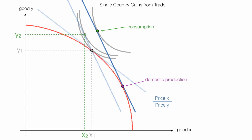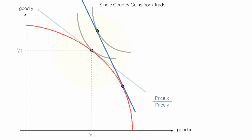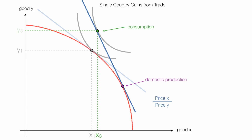To review quickly: the country shifts its level of production from the gray dot down to the purple dot — that's the level of domestic production. The country moves to a higher indifference curve and now consumes at that gray dot — this is domestic consumption. Now the country consumes higher levels of both good X and good Y: it consumes X3 of good X and Y3 of good Y. It produces X4 of good X and a lot less of good Y at Y4. The purple is domestic production and the green is domestic consumption.